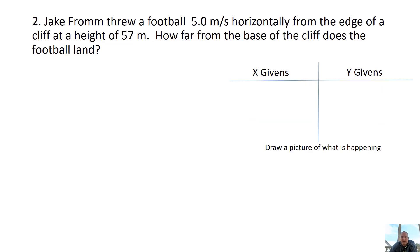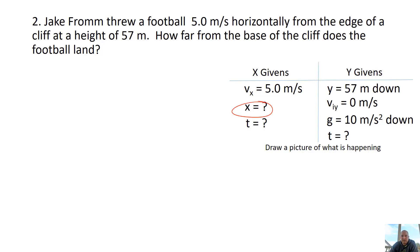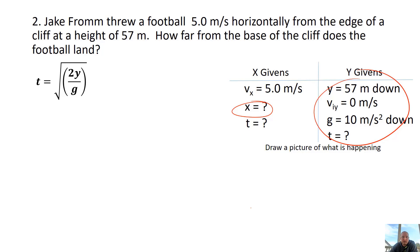Problem 2: Jake Fromm threw a football 5 meters per second horizontally from the edge of a cliff 57 meters high. It's thrown horizontally, so that gives us vx. It's going to fall 57 meters. It's not going down at the beginning — no viy. It's accelerating at 10 meters per second squared. We need to find how far from the base of the cliff it lands, but first we need time. Using our specialized equation with y and g, remembering the 2 and the square root, I get 3.38 seconds for time.